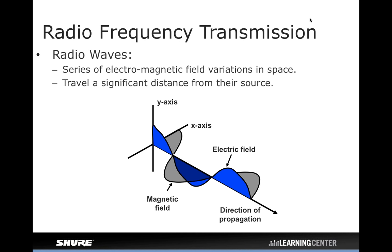The reason antenna theory is confusing to a lot of people is that human beings don't have a sense that detects radio waves — we can't see them, we can't hear them. They're kind of mysterious, and without specialized equipment it's hard to know what's going on to be able to work with them effectively. Here you can at least get a visual of what might be happening out there.